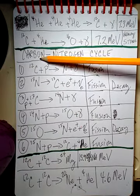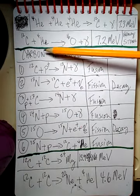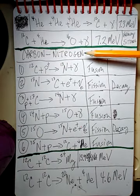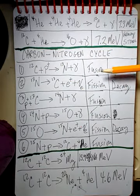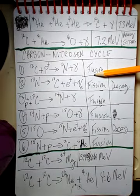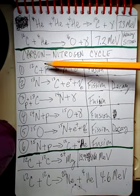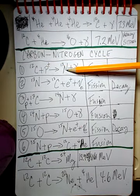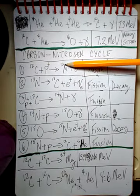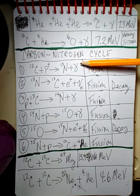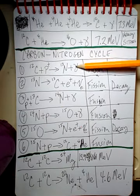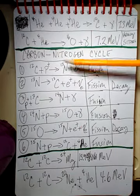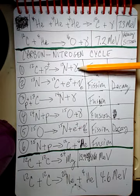Now let's take a quick look at something called the carbon-nitrogen cycle — I just want to include this for completeness. You start off with carbon-12 plus a proton, which will give you a nitrogen isotope — nitrogen-13 — plus some light. So the star is still producing some light in this carbon-nitrogen cycle.